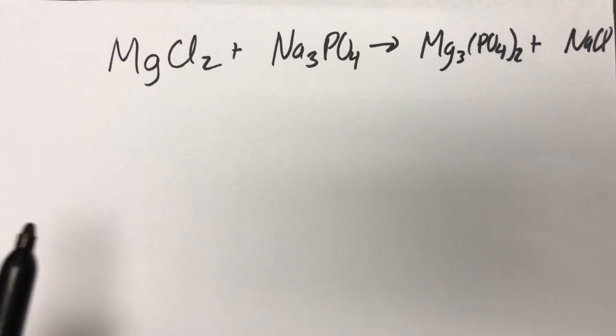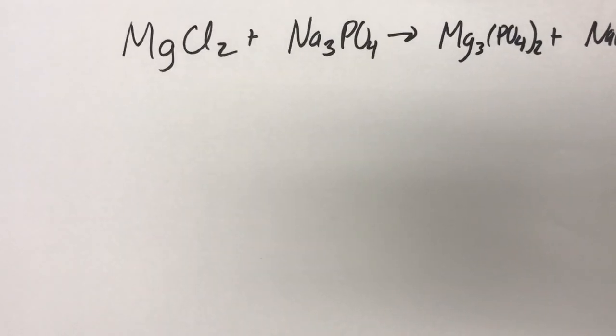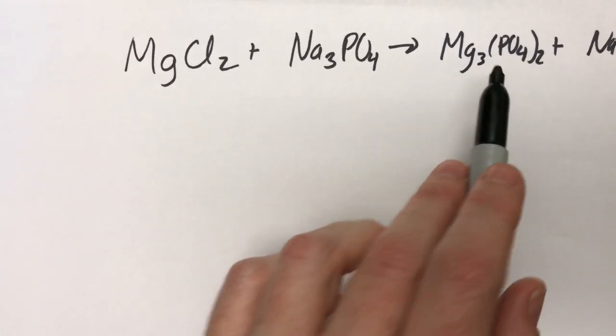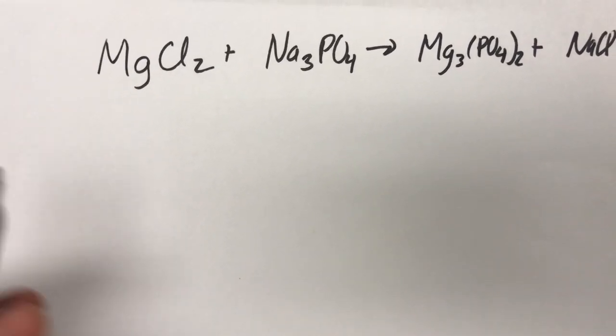We have magnesium chloride reacting with sodium phosphate to form magnesium phosphate and sodium chloride. Now we have to figure out the point of difference. But one of the things that we should pay attention to is the fact that we have a polyatomic ion here and here, phosphate and phosphate. If it did not change, if it remained phosphate on both sides of the reaction